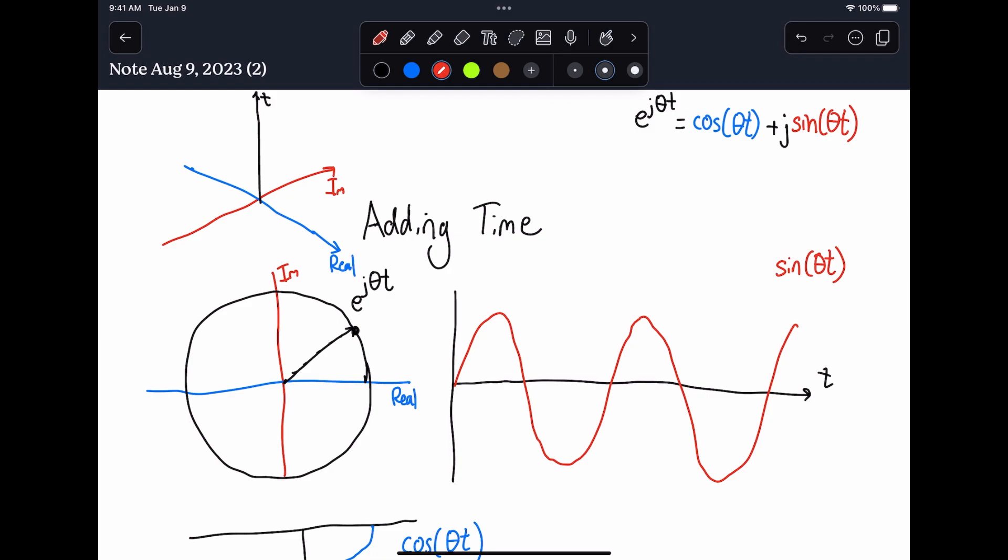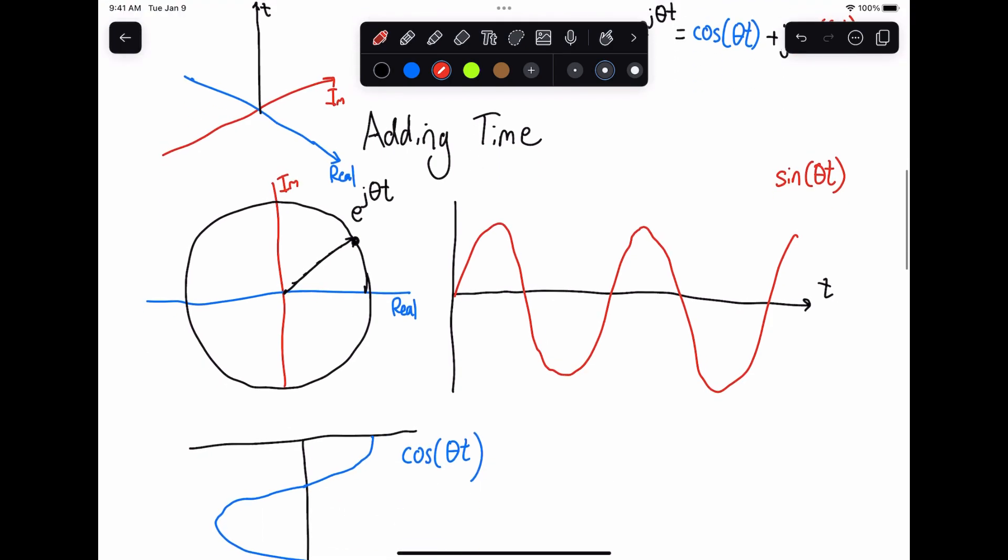Now, when we write Euler's expression, one of the things we can think about is when we write this as a function of time, and I haven't brought theta in yet, but you can imagine what's going on here is I have a ball on a string, and it's basically spinning around the circle starting on the real axis when t equals zero and just kind of rotating around this circle at a constant rate. Pretty simple.